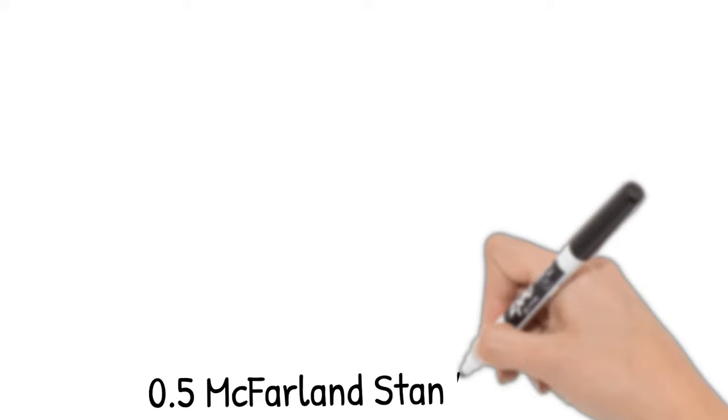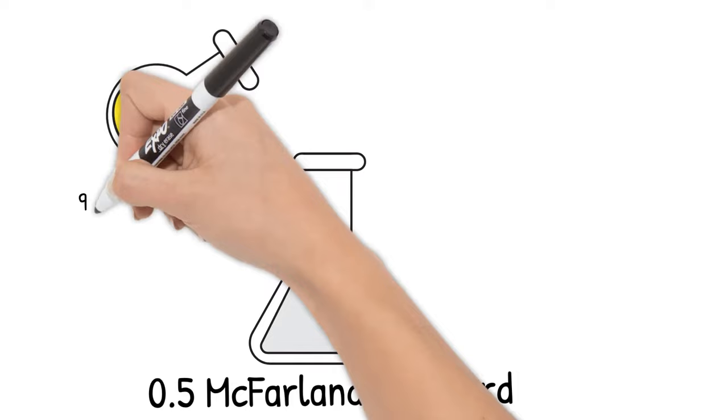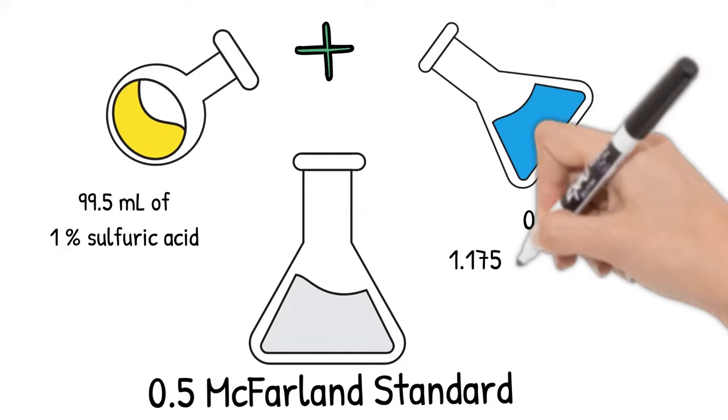How to prepare McFarland turbidity standards? The most commonly used is the 0.5 McFarland standard, which contains 99.5 ml of 1% sulfuric acid and 0.5 ml of 1.175% barium chloride.